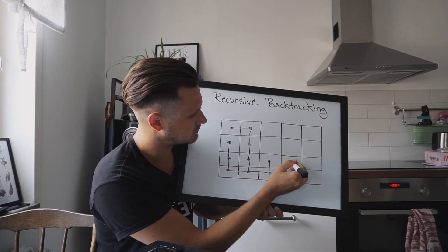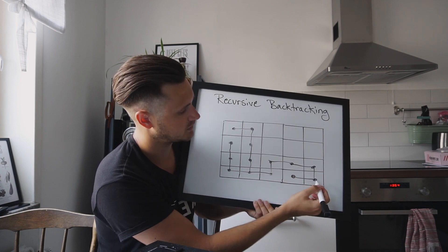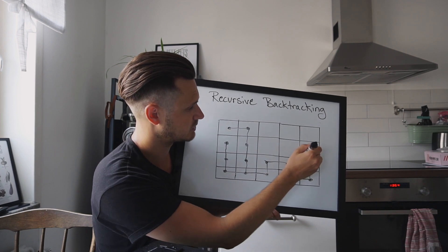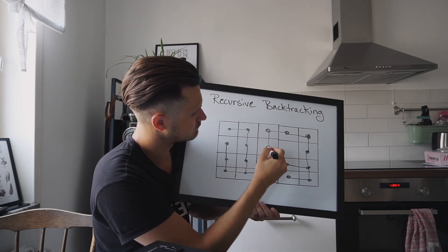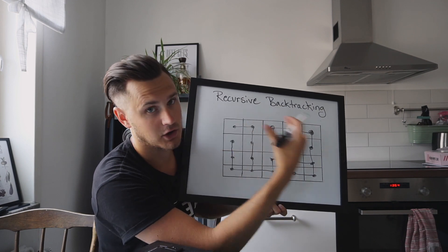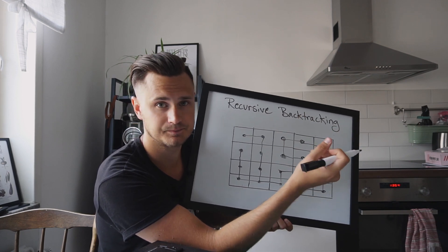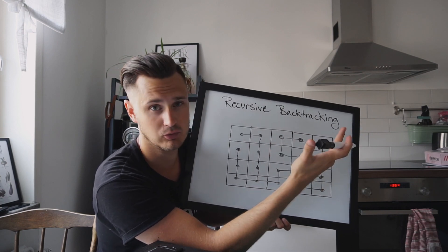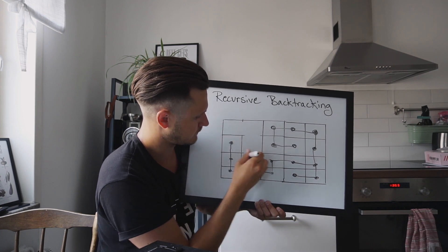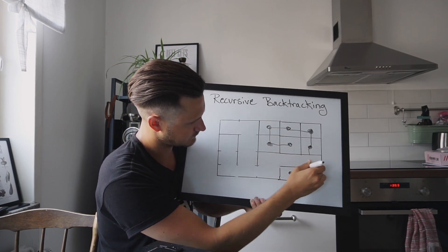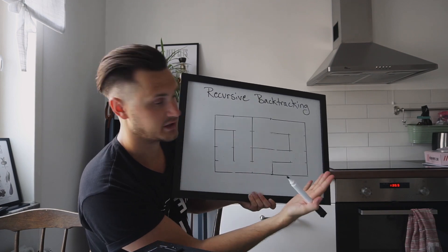From here we can go here, here, here — and we're stuck again. So we backtrack. Can we move from this cell? No. Can we move from this? Yes, upwards. And when all the cells are visited — and because of the backtracking aspect of this algorithm, we will visit all the cells — when all the cells are visited and there are no more valid moves, we just remove the walls between the connected cells.